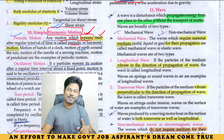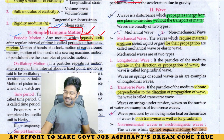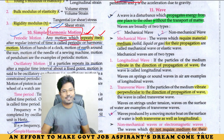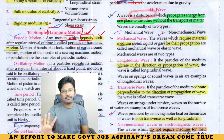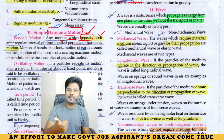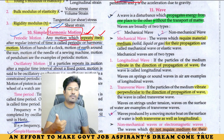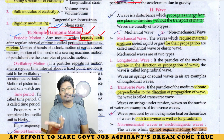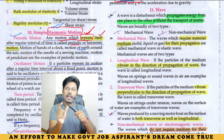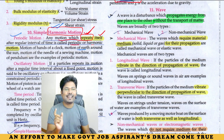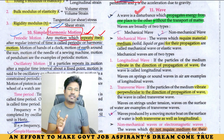The definition itself makes it clear. A wave is a disturbance which propagates energy from one place to another without transport of matter. Matter is not transported — only energy is transported. That type of disturbance is a wave.